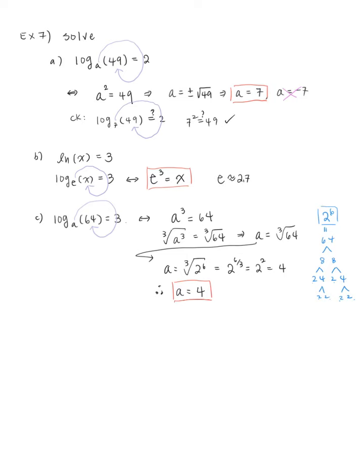Part d: ln of x equals 9, solve for x. Rewrite as log base e of x equals 9, which gives e to the 9 equals x. Since e is a constant, x equals e to the 9th — that is your exact answer.